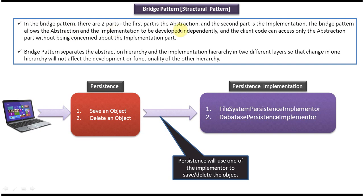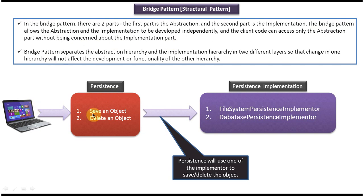In the bridge design pattern there are two parts: the first part is abstraction — in this case that is the persistence, which handles saving or deleting an object — and the second part is implementation, which is the persistent implementation layer. The bridge pattern allows abstraction and implementation to be developed independently. I can add a new implementation or remove any implementation without affecting the abstraction part. Client code can access only the abstraction part and it doesn't know how the implementation has been done.